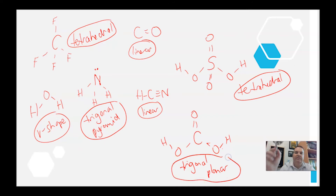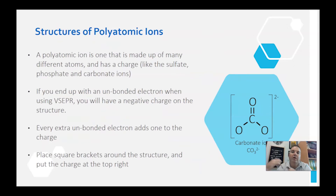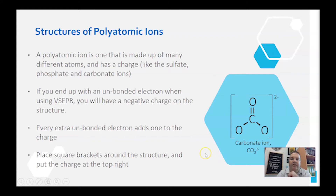So that covers all seven structures, going through the five different shapes: tetrahedral, linear, trigonal pyramid, and trigonal planar. If you need more practice, I suggest looking at my YouTube video on drawing molecular structures — that's really useful. Now we're moving on to polyatomic ions.